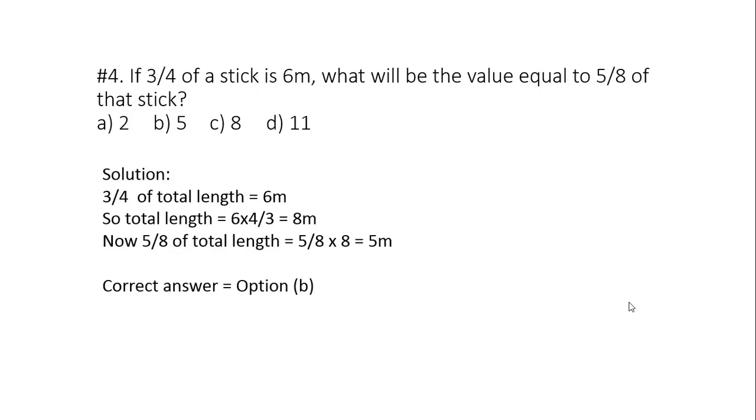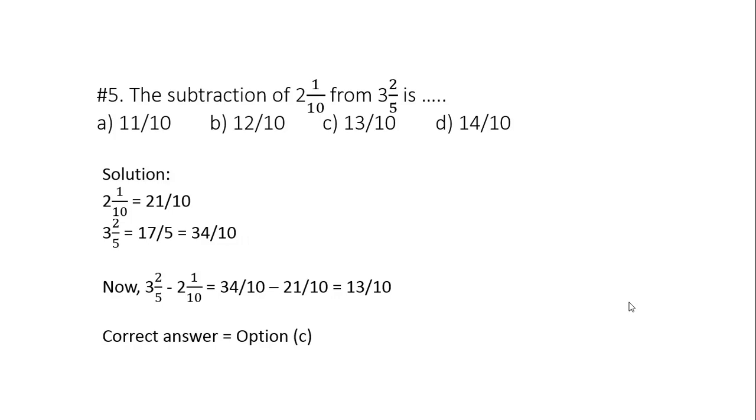Question 4: If 3 by 4 of a stick is 6 meter, what will be the value equal to 5 by 8 of that stick? So in the question it has been stated that 3 by 4 is equal to 6 meter. So total length will be 6 into reciprocal of 3 by 4, that is 4 by 3. Total length will be 8 meter. Now 5 by 8 of 8 meter will be 5 meter. So the right option is B.